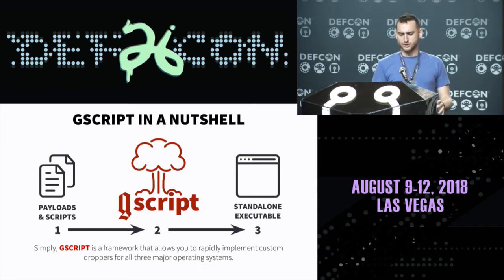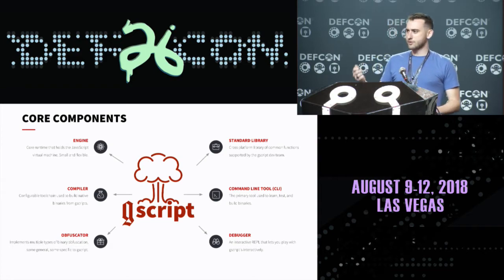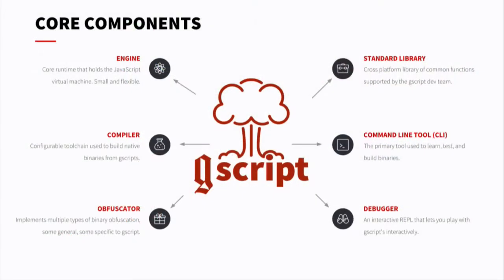G-script is a framework that allows you to rapidly implement custom droppers for all three major operating systems. What makes up G-script? There's the engine — inside the native binary, it runs and executes the logic specified in your script. There's the compiler — it takes your script and turns it into that native binary. There's an obfuscator hooked into the compiler to make it harder for blue teamers. We have a standard library with functions you can use inside Genesis scripts, a command line tool to interact with the compiler, and an interactive debugger to help you develop scripts reliably and test them ahead of time.